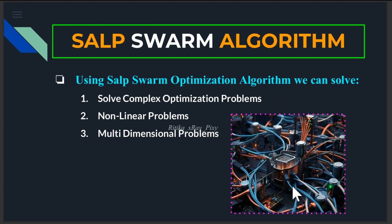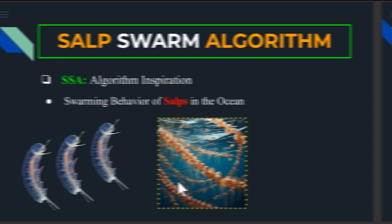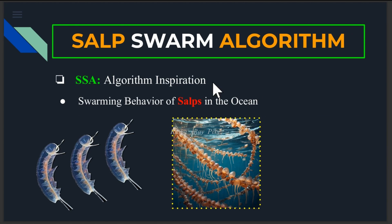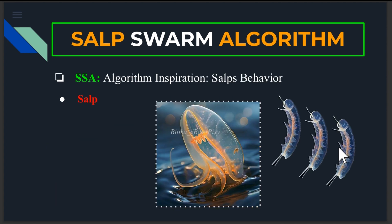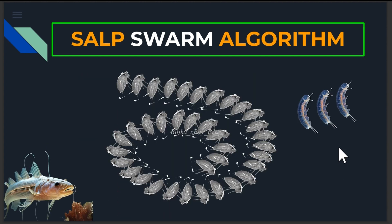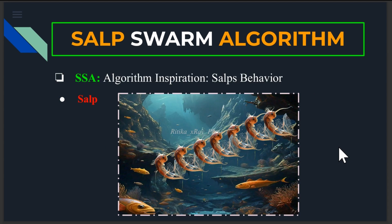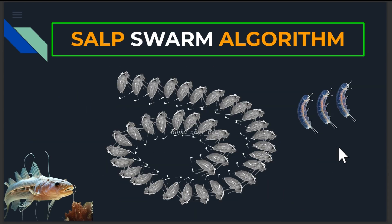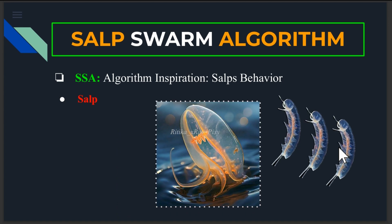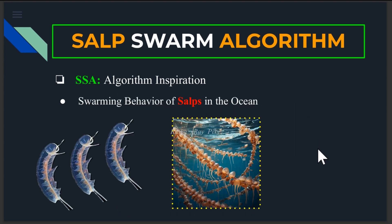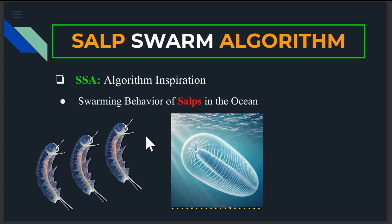We will start with the algorithm inspiration — the salp swarming behavior. First we will discuss different strategies salps use for survival and their behavior, because this algorithm's structure is modeled on salp behavior. The swarming behavior of salps: they are marine organisms that swim in chain-like formation.